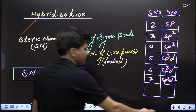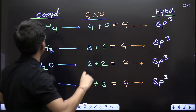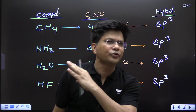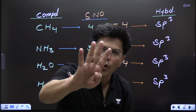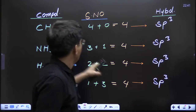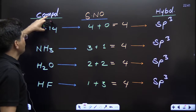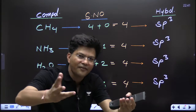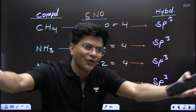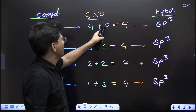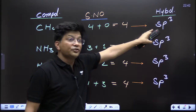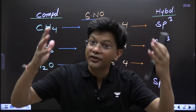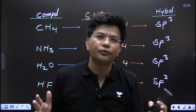Example one: carbon, silicon, germanium, tin, lead — how many electrons in the outermost orbit? Four. And all these four are forming four sigma bonds, so sigma = 4, nothing is left, zero lone pairs. Four (sigma) + zero (lone pairs) = 4, so sp³ hybridization.